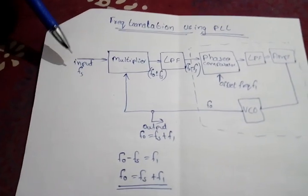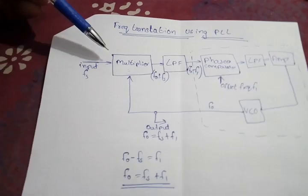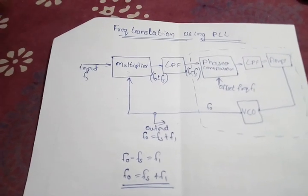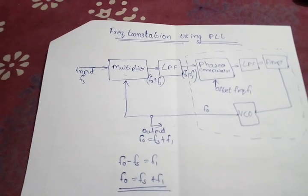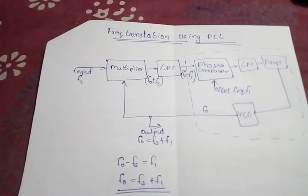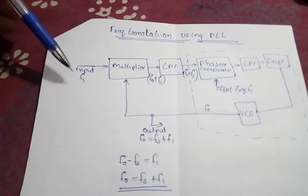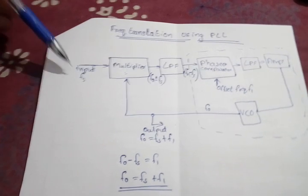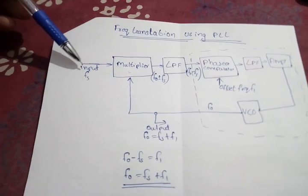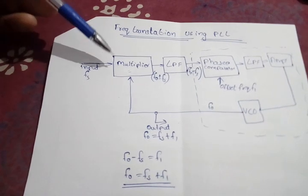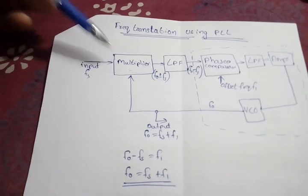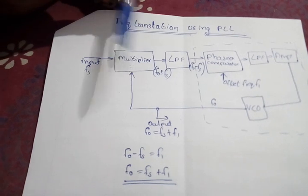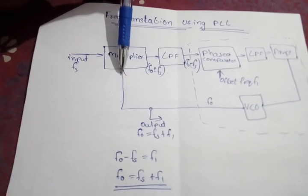First, the input frequency FS is given to the multiplier. FS is the frequency which we have to translate — that is, the input frequency we have to change — and we give it into the multiplier. The other input of the multiplier is the VCO output.